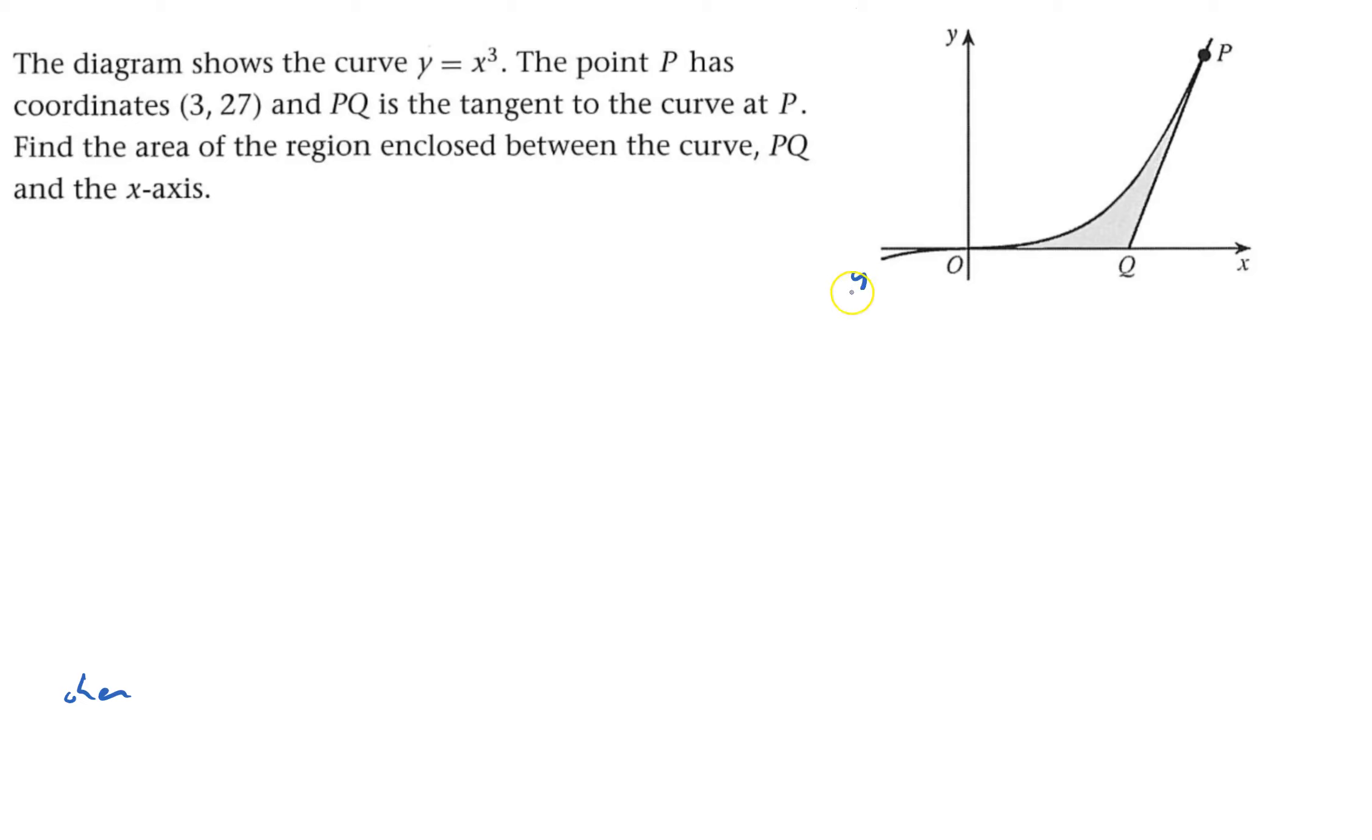Okay, so that's y equals x cubed, the curve, and that's P, which is (3, 27), so that means if I go all the way down to here, that's 3.